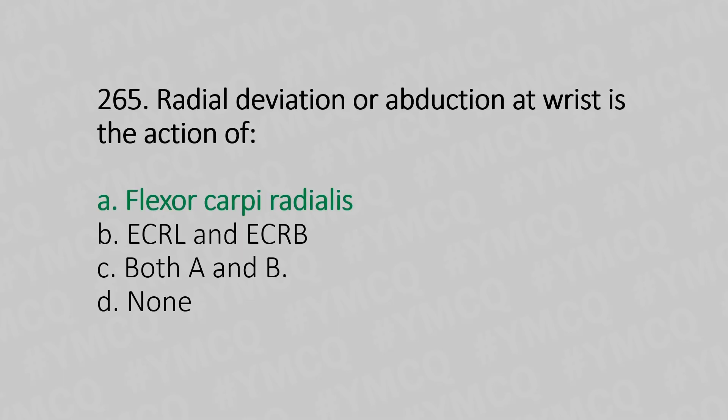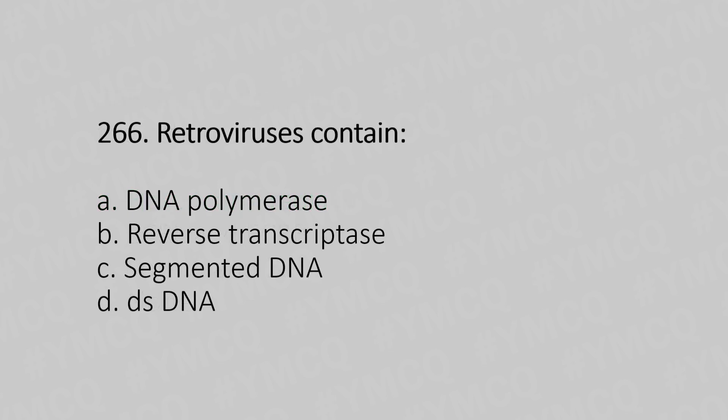Now let's move to question number 266. Retrovirus contains: Option A, DNA Polymerase; Option B, Reverse Transcriptase; Option C, Segmented DNA; Option D, dsDNA. And the answer is Option B, Reverse Transcriptase.